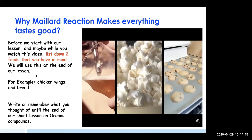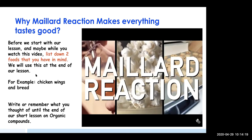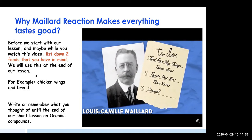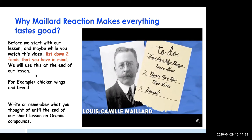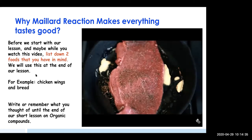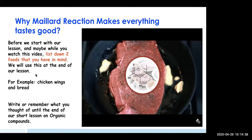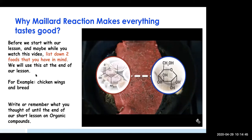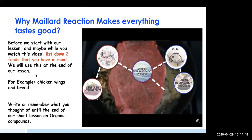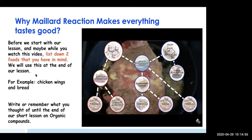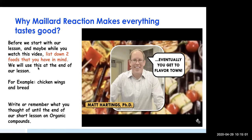The Maillard reaction produces hundreds of compounds, some contributing amazing smells and flavors: alkyl pyrazines give cocoa or nutty roasted flavor in coffee; caramel-like furanones are found in bread and toast; meaty thiobeans appear in meat and garlic. The color of beer, the smell of popcorn, even cookies — all wouldn't be the same without the Maillard reaction. Since French chemist Louis Camille Maillard first reported this transformation about 100 years ago, scientists have been trying to sort out what actually happens. As one chemistry professor puts it: eventually you get to flavor town.